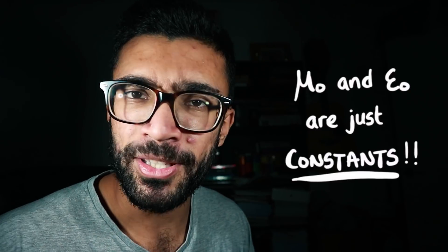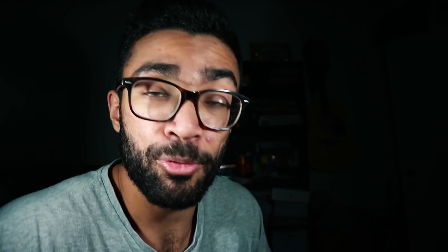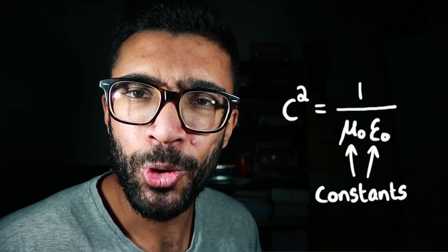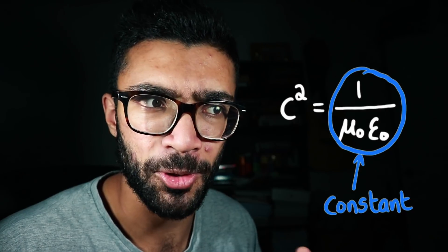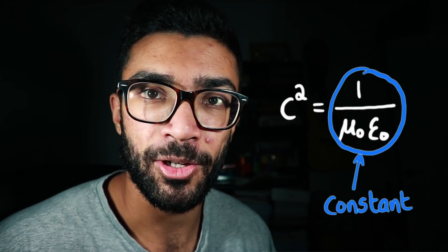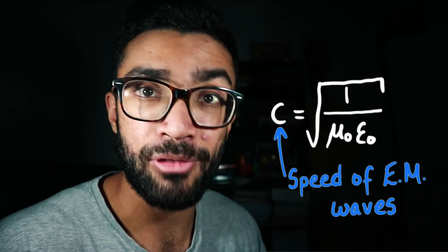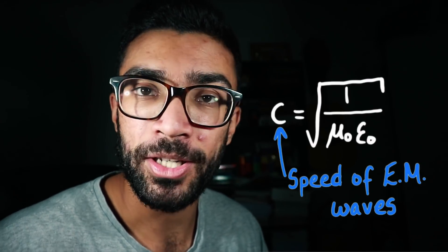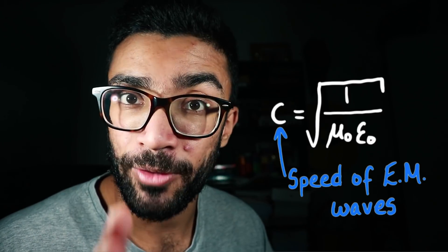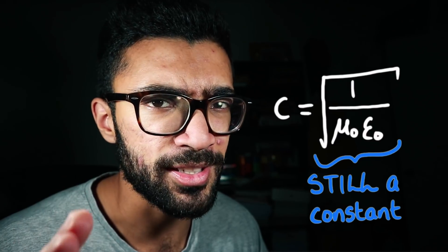What are mu naught and epsilon naught? They're just constants — specifically properties of empty space, properties of a vacuum. But since they're constants, 1 divided by mu naught epsilon naught is also just a constant. Taking the square root of both sides, on the left we have c — the speed of electromagnetic waves — and on the right we have the square root of 1 divided by mu naught epsilon naught. That whole right-hand side is just a constant. Interesting.